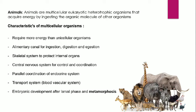Multicellular organisms require more energy compared to unicellular organisms. Since unicellular organisms are extremely small, they don't require a large amount of energy. However, in multicellular organisms, every cell needs to perform individual functions, so they require a lot of energy. They also have a well-developed alimentary canal for ingestion — taking in food — digestion — breaking down food into simpler form — and egestion — expelling waste from the body.